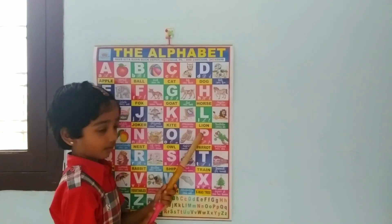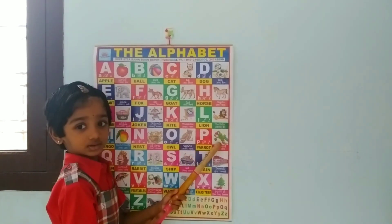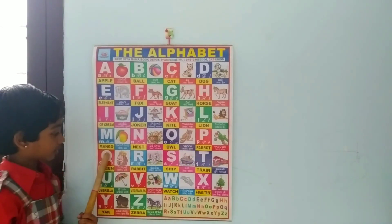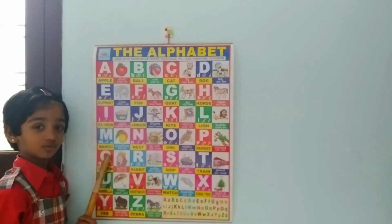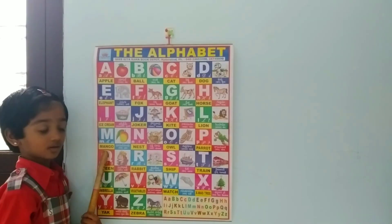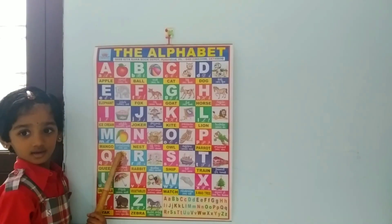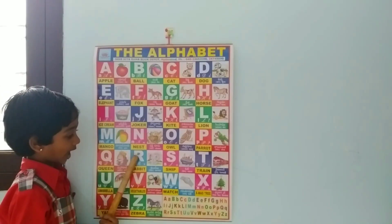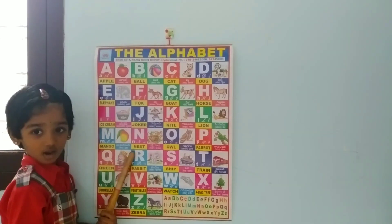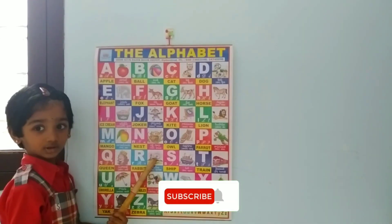P, P for Parrot. Q, Q for Queen. R, R, R for Rabbit.